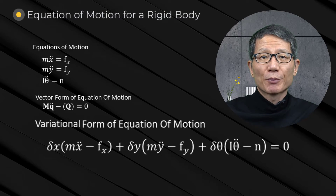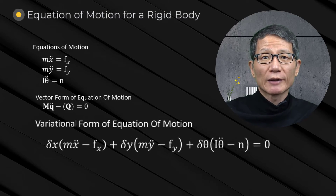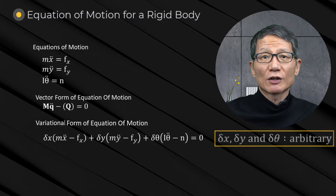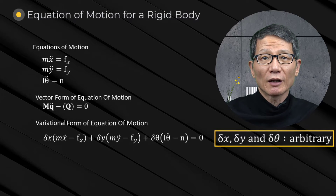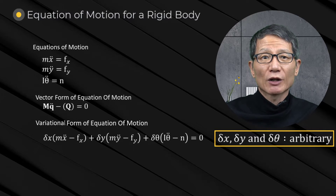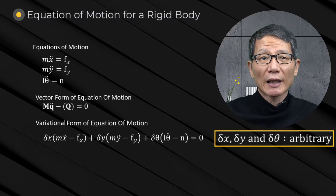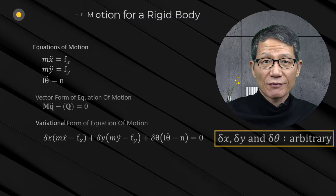It is important to note that the two forms of equations of motion become the same when the arbitrariness conditions of delta x, delta y, and delta theta are satisfied.